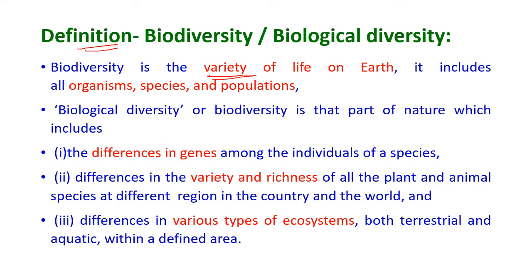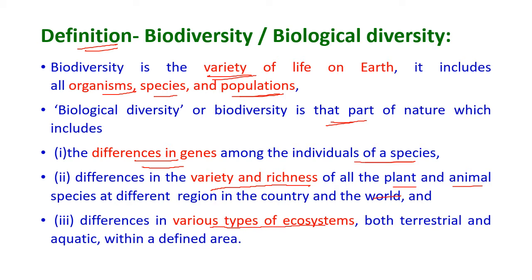Definition of Biodiversity: Biodiversity means the variety of life on earth. It includes all organisms, species, and populations on earth. Biological diversity includes the differences in genes among the various individuals of a species, differences in the variety and richness of all plant and animal species at different regions, and differences in the various types of ecosystems — both terrestrial and aquatic — within a defined area.